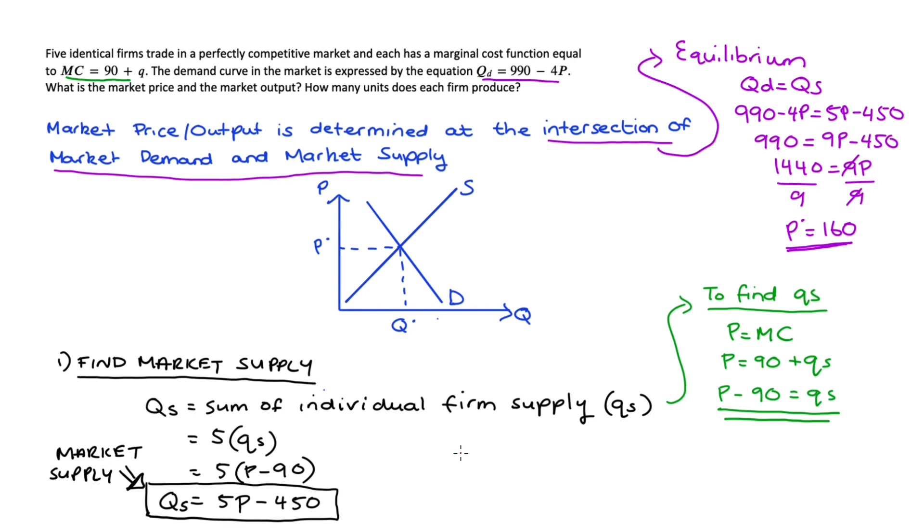Visually that's just this price here. I can find the quantity traded in the market by substituting that price of 160 into either my demand or supply because they're equal at that point. I'm just going to put it into my demand equation and I get quantity demanded is equal to 990 - 4 times 160. Now 4 times 160 is 640, and this difference comes to 350 in total, so that's our Q*, the quantity traded in the market in equilibrium.